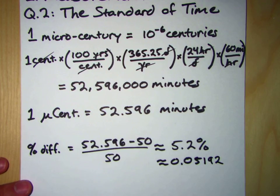Now, remember the question asked the percent difference from the estimate. If this had said, what was the percent difference of Fermi's estimate from the actual number, then we would have gone 52.596 minus 50 divided by 52.596. So be careful there.